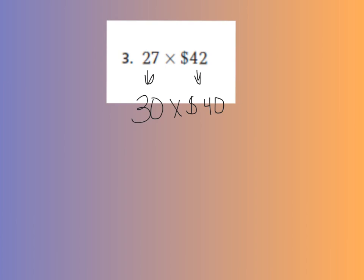Now, we can multiply our basic facts. 3 times 4, that gives me 12. 12, and our two zeros, we have 1,200 as our estimate. And now we're ready to try some on our own.